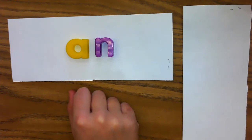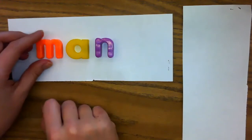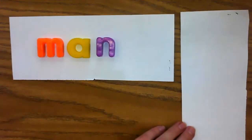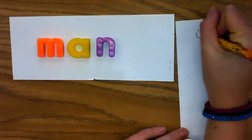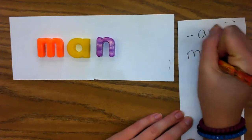For example, an is the last part of the word man. See that word man? The ending part is an. Now, let's make a list over here of our an words. We made man.